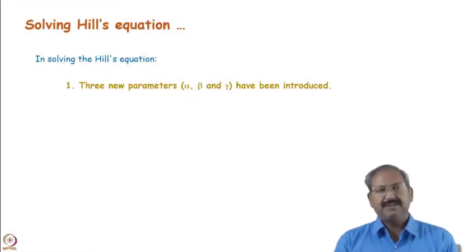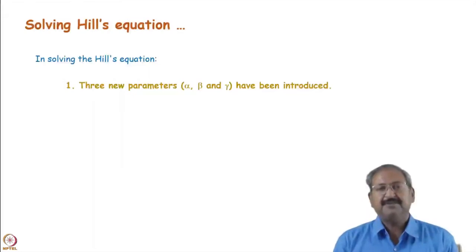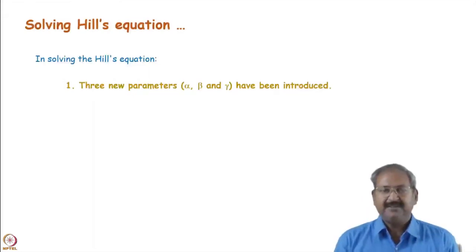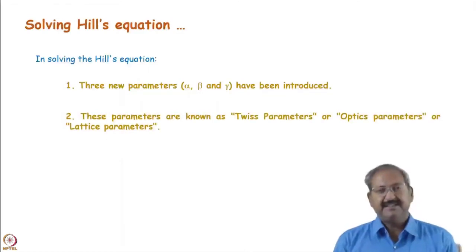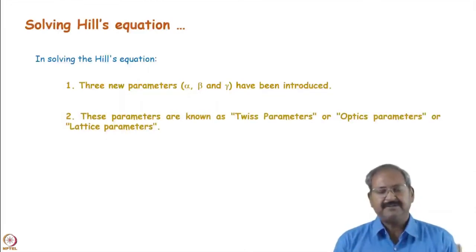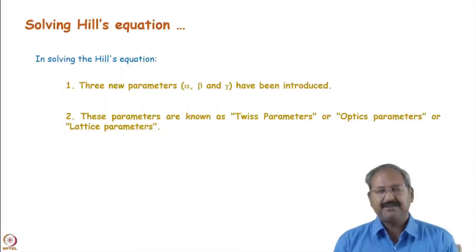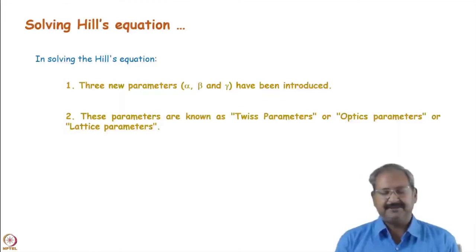Solving Hill's equation by this method, we introduce three new parameters: alpha, beta, and gamma. We will shortly see what physical significance these parameters have. These parameters are known as Twiss parameters, and some literature calls them optics parameters or lattice parameters.